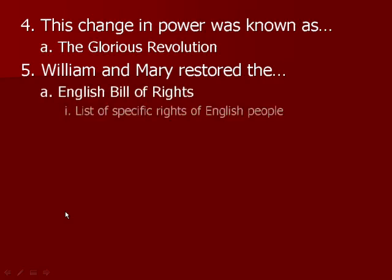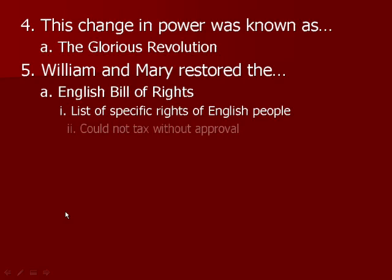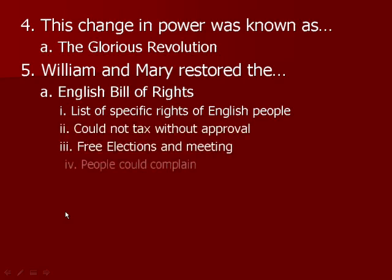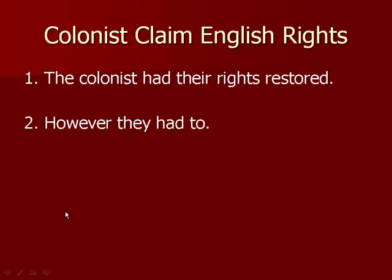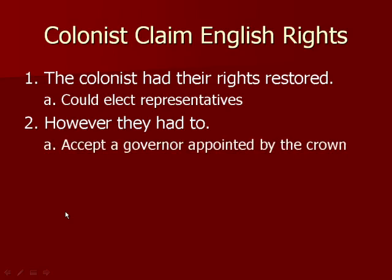The English Bill of Rights was re-established by William and Mary — a list of specific rights of English people. The king could not tax without approval, there would be free elections and meetings, and people could voice complaints. The colonists had their rights restored because of this Glorious Revolution. They could again elect representatives, but they also had to accept a governor appointed by the crown.